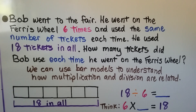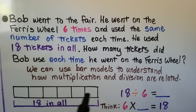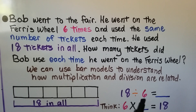Bob went to the fair. He went on the Ferris wheel six times and used the same number of tickets each time. He used 18 tickets in all. How many tickets did Bob use each time he went on the Ferris wheel? We can use bar models to understand how multiplication and division are related. There are 18 tickets in all; we know he went on the Ferris wheel six times, so we can make six sections of our bar model. That means we have 18 divided by 6.